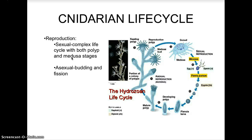Cnidarians have both a sessile polyp form and a motile medusa form — this is the cnidarian life cycle. Here you can see the hydrozoan life cycle: the polyp form, then the medusa form, then in sexual reproduction after meiosis there is the exchange of sperm and egg, fertilization, and then the planula larva, which is motile. That larva would move around using cilia, find its place on a substrate, and then the polyp would start to grow into the adult hydra. Asexual reproduction occurring in hydra would be budding.